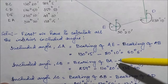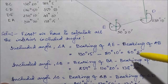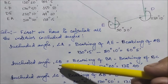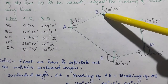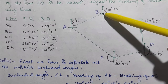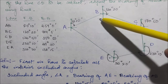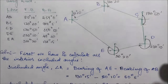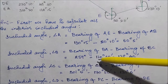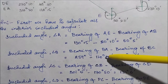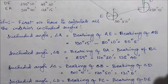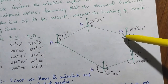The included angle B is given by the bearing of line BA minus the bearing of line BC. Bearing of BA is 259°00′ minus bearing of BC which is 120°20′, giving us an included angle B of 138°40′.